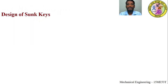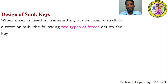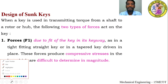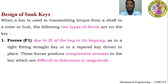Now let us come to design of sunk keys. In the previous session I gave a little introduction about the design of sunk keys. When the key is used to transmit a torque from the shaft to the hub, the following two types of forces act on the key. Force F1: due to fit of the key in the keyway — as in tight fitting, a strike key or a tapered key driven in place. Whenever the key is inserted into the keyway of the shaft, compressive forces are produced in the key. But these stresses are difficult to determine, so we are not considering much about these compressive stresses.